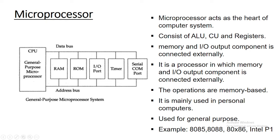The microprocessor acts as the heart of the computer system. It usually consists of an ALU (arithmetic and logical unit), a control unit, and some registers. The ALU is responsible for processing data — it performs arithmetic and logical operations. The control unit gives control signals, and registers are used for holding data temporarily. So the microprocessor is essentially the CPU (central processing unit) on a single integrated chip, containing the ALU, CU, and registers.